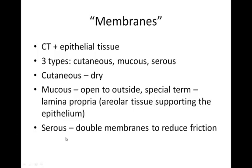And then we have our serous membranes, which we went over in Chapter 1. Serous membranes are double membranes that reduce friction. Our serous membranes would line the body cavity and then cover the organ, so it would be between the organ and the body cavity, reducing friction between that organ and the body cavity that it lies within.